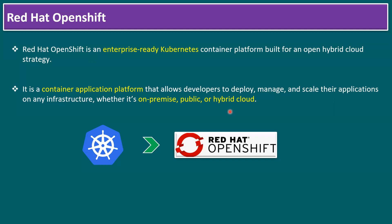In our lab environment it is running on-premises within a vSphere platform. Most enterprises, when they're using Kubernetes in a test environment and planning to move to production, it's recommended to use an enterprise-grade Kubernetes platform. One such platform is Red Hat OpenShift, so for production environments we recommend customers use enterprise-grade Kubernetes platforms instead of open-source Kubernetes.